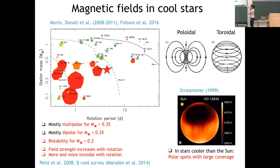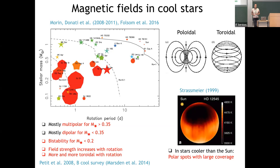For stars of solar mass, if you increase the rotation rate (decrease the rotation period), the field becomes more and more toroidal. One striking feature is that at the same location in the diagram you can find stars with very different magnetic characteristics — either a very strong poloidal field or a very weak multipolar field. This bistability is seen not just for cool stars but also for pre-main-sequence young stars. This snapshot gives us a lot of constraints for the models.